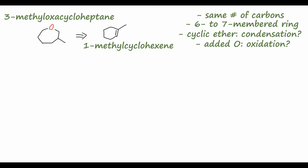Starting from the product and going backwards: we could probably form the cyclic ether from an ether condensation using two alcohols. If we take this acyclic diol — with two hydroxyl groups on either side of the chain and a methyl group — and treat it with dilute sulfuric acid, we can condense those two alcohol groups, releasing water and closing the ring to form the cyclic ether in the desired position.